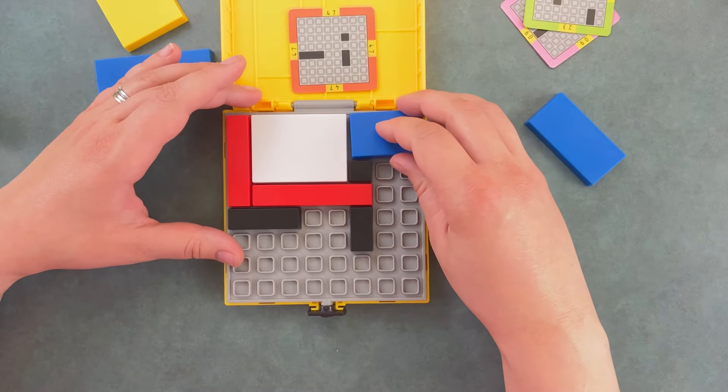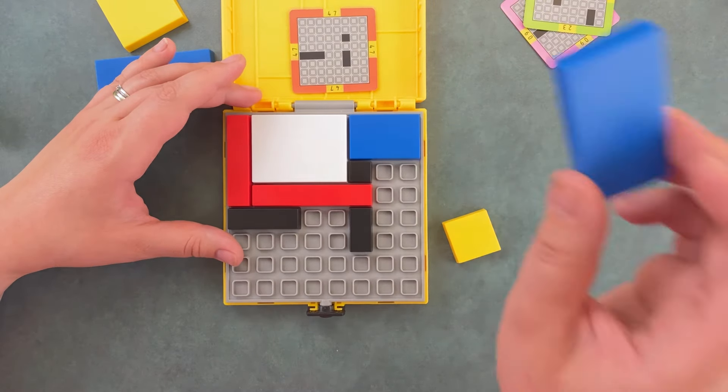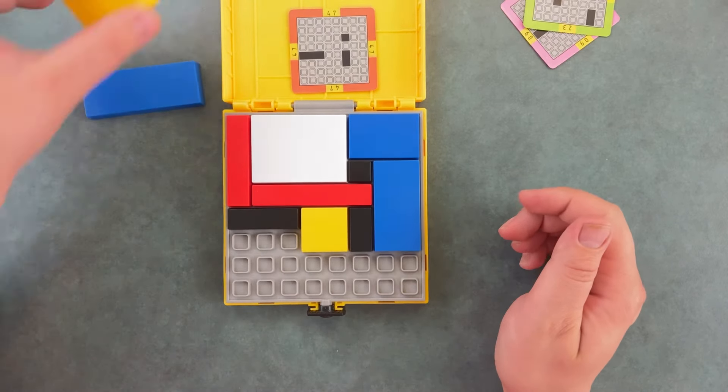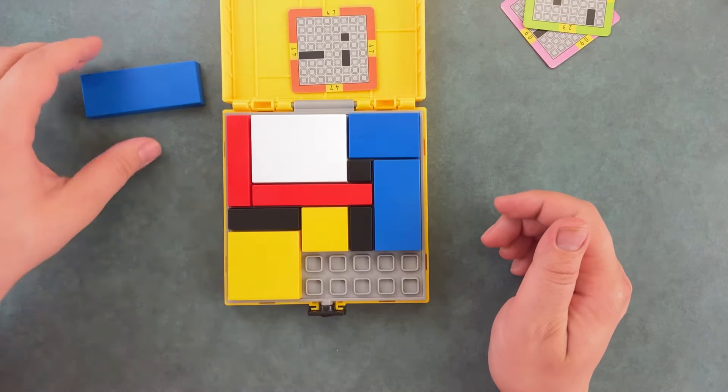Now the small blue piece can go in the right hand corner. Take this blue piece, placing it here. This yellow piece can go in the center of the puzzle. Take this yellow piece, placing it on the left hand side.